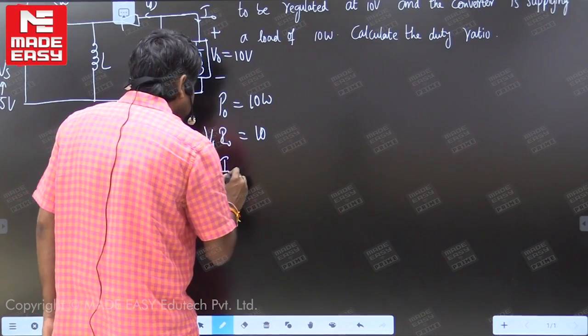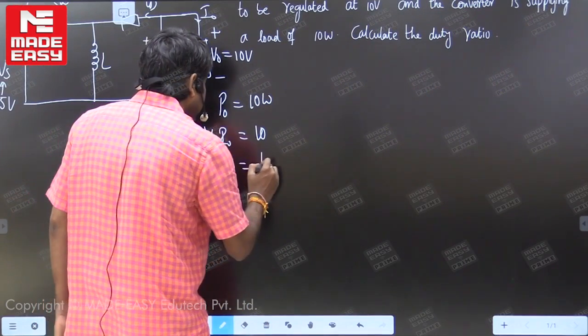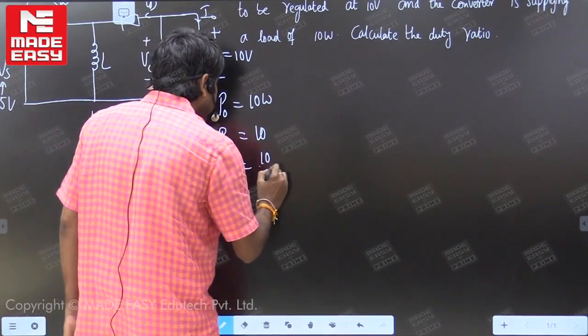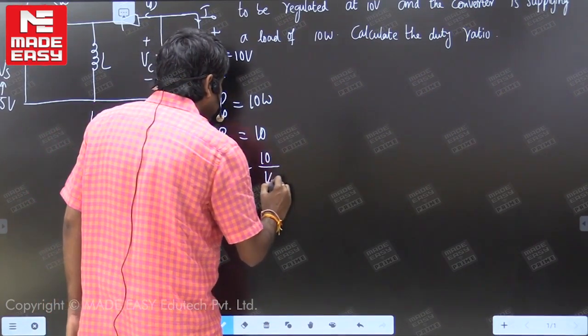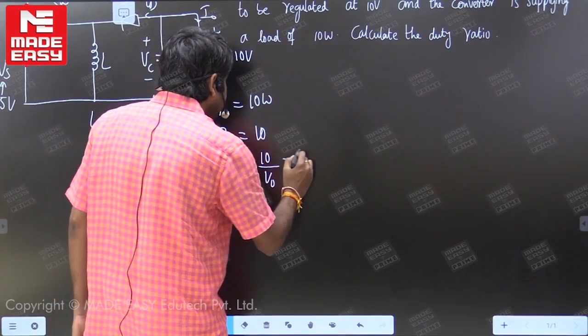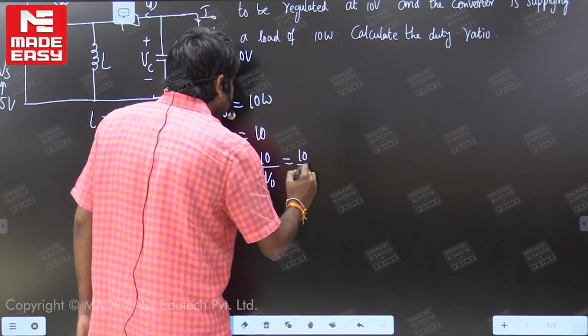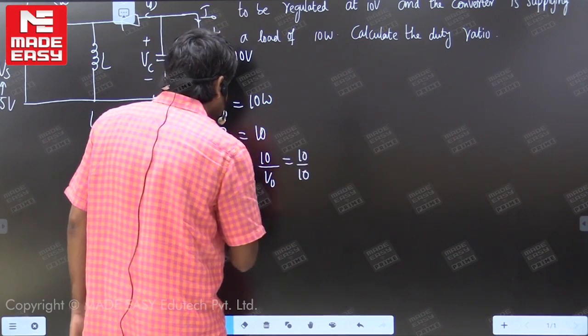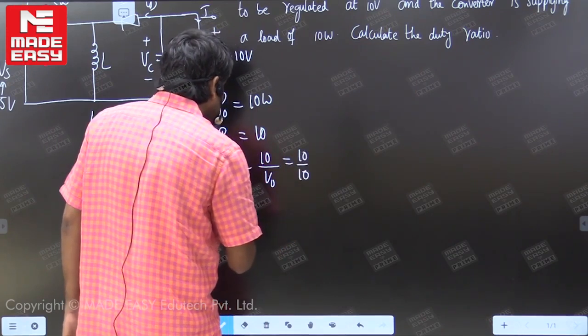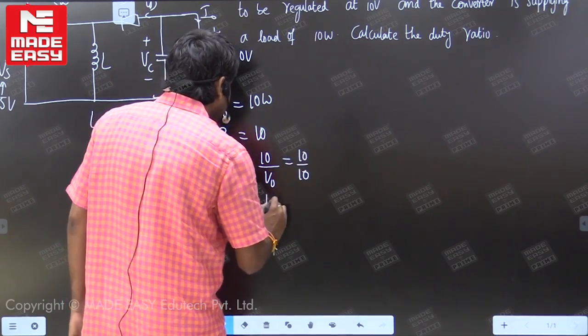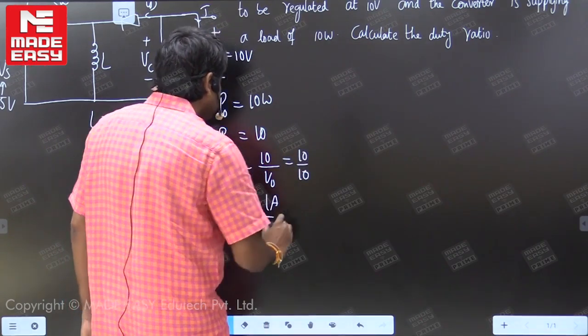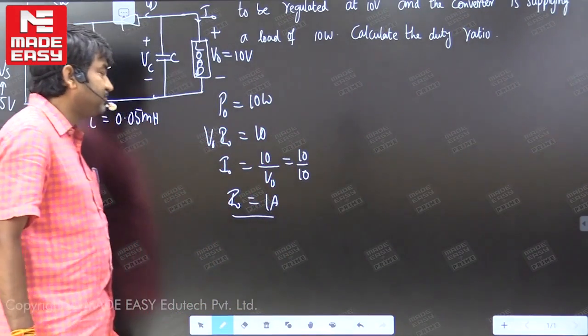I_naught is equal to 10 watts divided by V_naught. Since V_naught is 10 volts, I_naught equals 10 divided by 10, so the output current is 1 ampere.